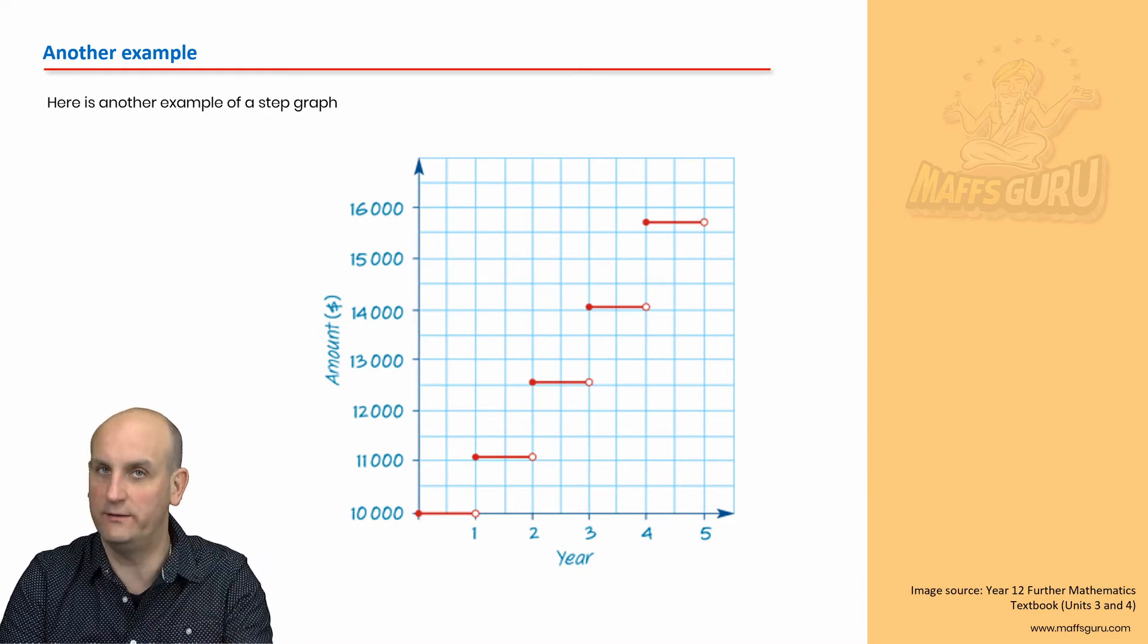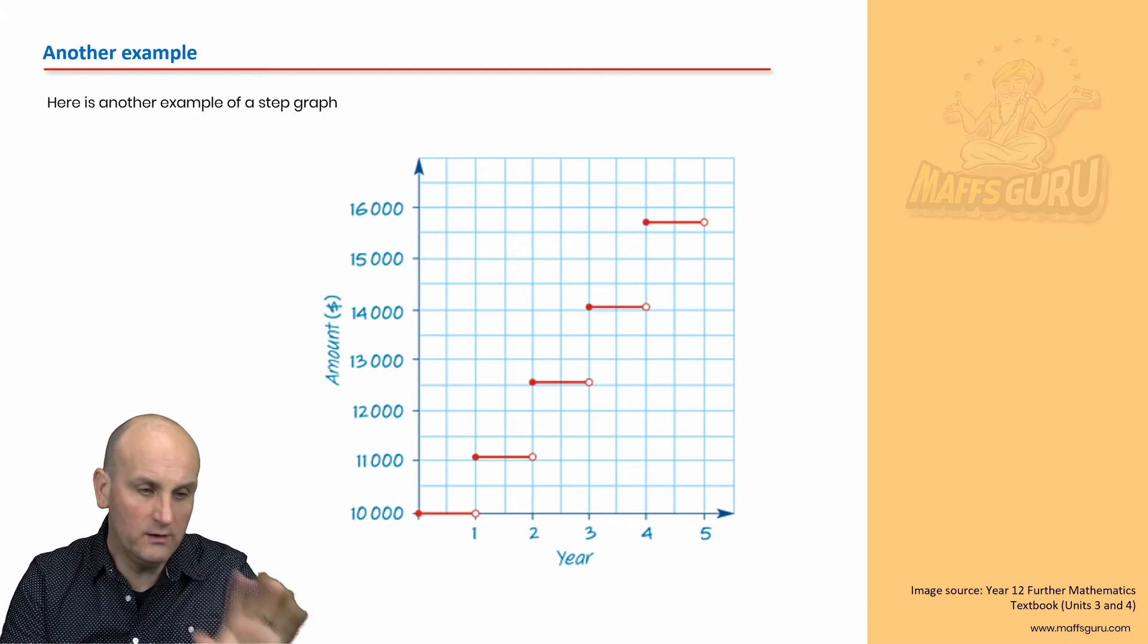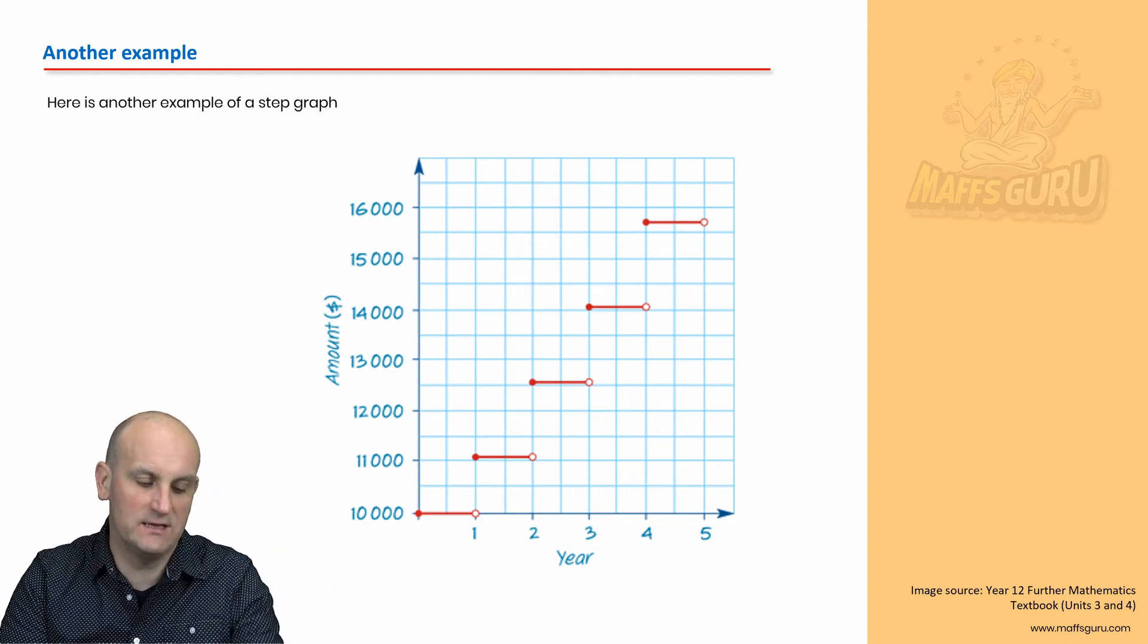Well, hold on graph hopper. We will wait. Wax on, wax off. Wax on, wax off. Anyway, here's another example of a step graph.